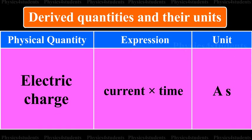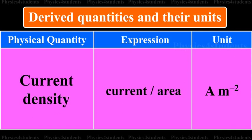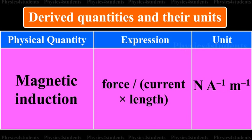Physical quantity is current density. Its expression is current by area. Its unit is A m raised to minus 2. Physical quantity is magnetic induction. Its expression is force by current into length. Its unit is kg A raised to minus 1 m raised to minus 1.